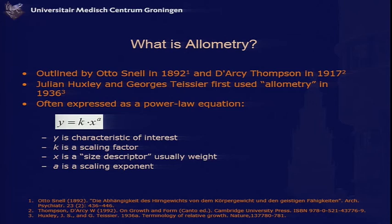Very often these allometric equations are power law equations. Some characteristic of interest — that might be clearance, some kind of rate, or some other property of a biological system — is equated in an equation which is K, some scaling factor, times a size descriptor raised to a power A. It's usually weight, but not necessarily. A is the scaling exponent, and what is interesting is what that scaling exponent turns out to be, which depends on the characteristic of interest.